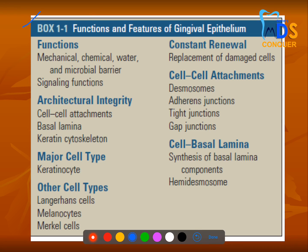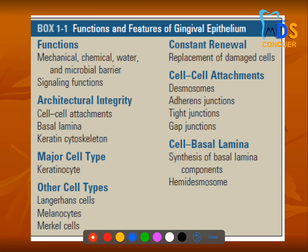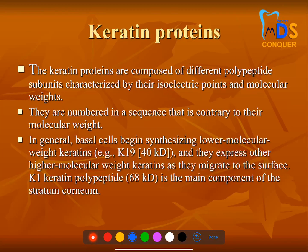This box from Carranza is important — everything here can be asked as individual bits. For example, they may ask which of the following is a major cell type seen in the epithelium, giving options like keratinocytes, Langerhans cells, melanocytes, and Merkel cells. The answer is keratinocytes. These are the various ways questions can come from this box.